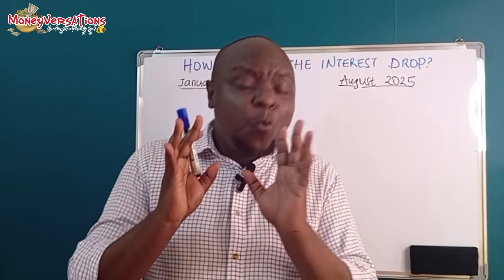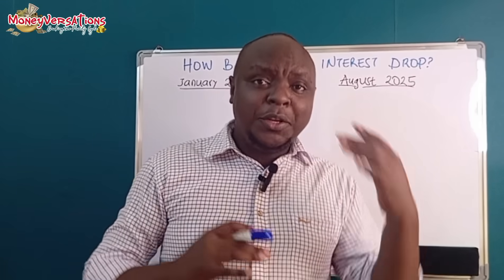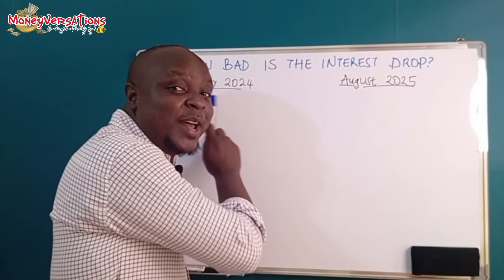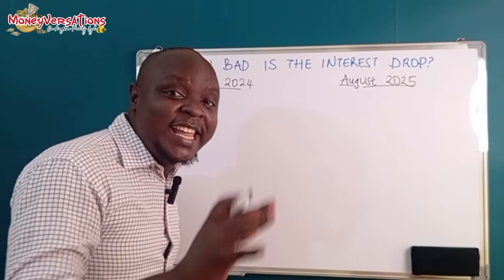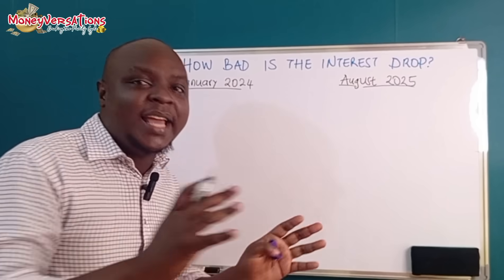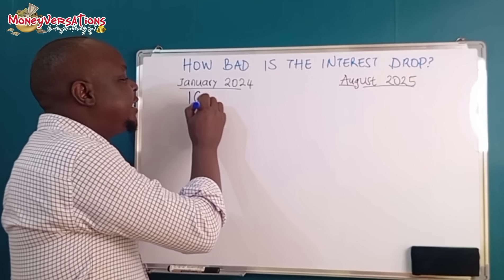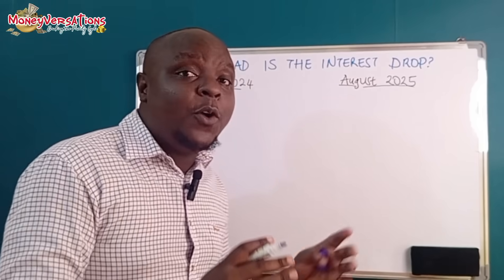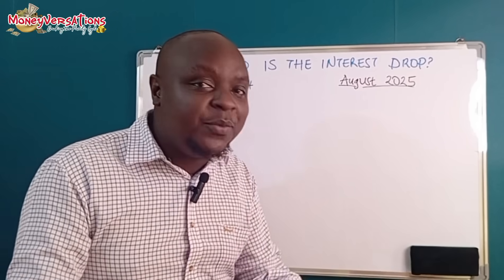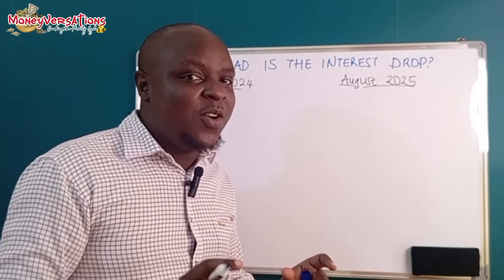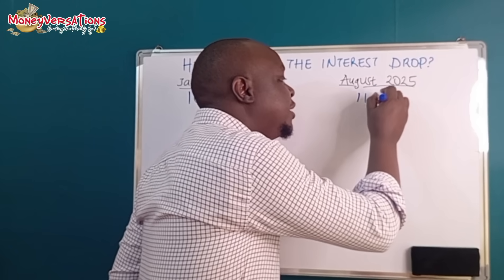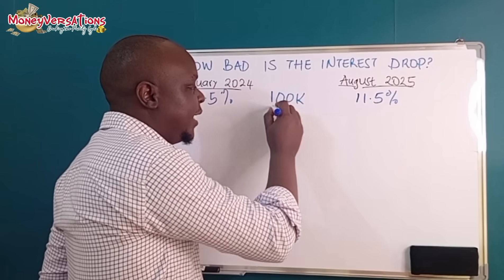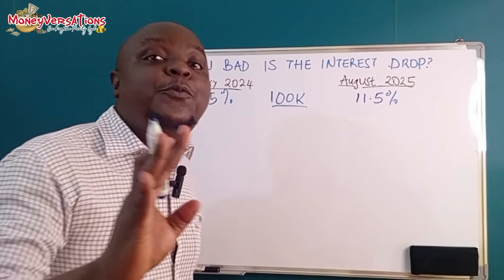We are going to compare the figures by looking at the mathematics of how interest rates looked in January 2024, when the daily average interest rate of a company like Etika or Kusa was at 16.5 percent, and jump forward to August 2025, where we are now, when the interest rate is at 11.5 percent. The figure we are going to work with is 100,000 shillings.